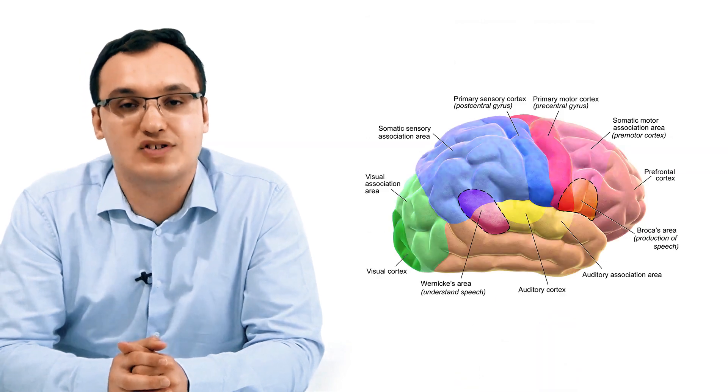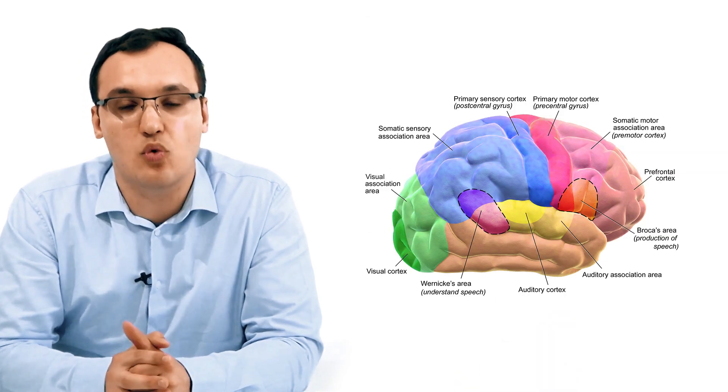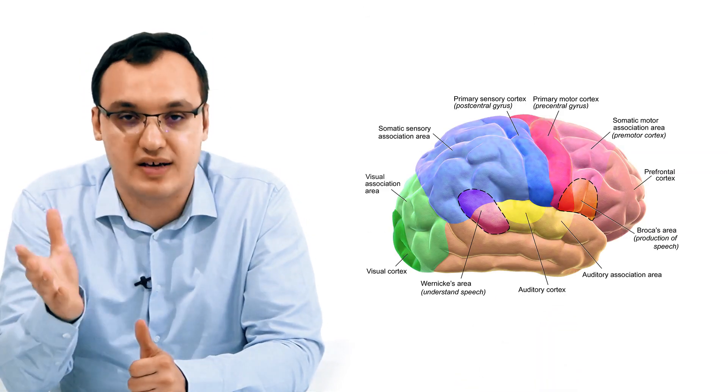If another region of the brain gets affected — for example, the region controlling movement, leg movement or arm movement — then the patient cannot walk anymore. There can also be paresis, where the whole arm or the whole leg cannot be moved anymore. These effects all depend on which region of the brain is affected.